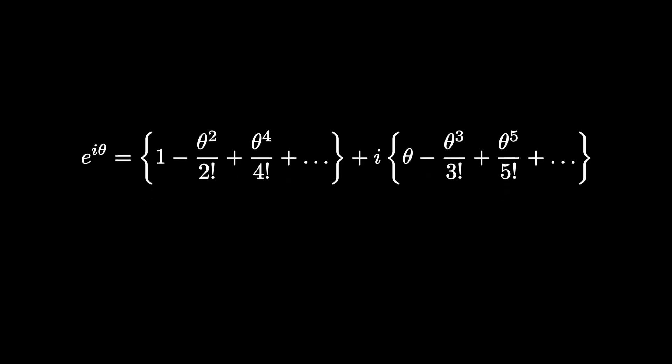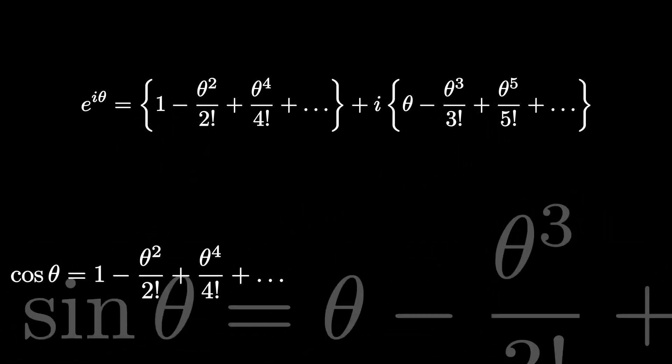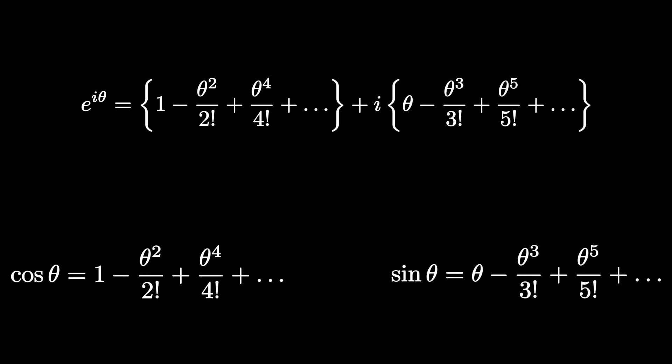Now, for clarity, let's bring in the Maclaurin series for cos θ and let's bring in the Maclaurin series for sin θ. And now, it is quite obvious that the real part is cos θ and the imaginary part is sin θ. And there we have proved Euler's formula.